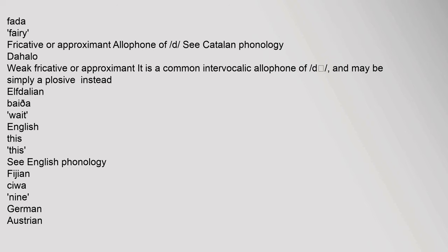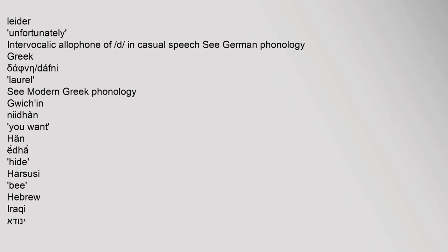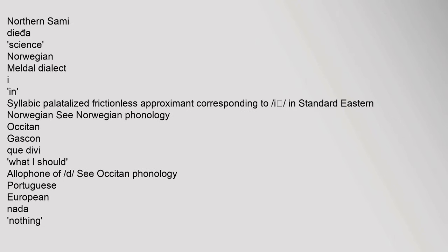In Catalan, it is a common intervocalic allophone and may be simply a plosive instead. In Elfdalian, it appears in the word meaning 'wait.' In English, it appears in 'this' (see English phonology). In Fijian and German-Austrian, it appears as an intervocalic allophone in casual speech (see German phonology). Greek uses it in 'Daphne,' meaning laurel (see Modern Greek phonology).